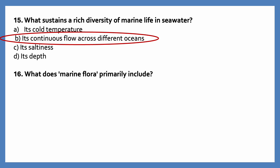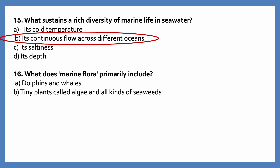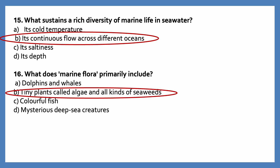What does marine flora primarily include? Options are: dolphins and whales; tiny plants called algae and all kinds of seaweeds; colorful fish; mysterious deep sea creatures. The correct answer is tiny plants called algae and all kinds of seaweeds.